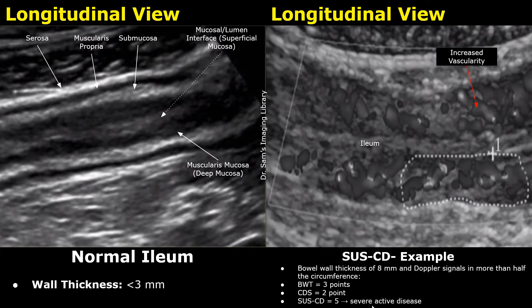Here is another example. In this case, the bowel wall thickness is 8 mm, so it gets 3 points in the bowel wall thickness category, since 3 points are given for 8 mm or greater. There is very strong vascularity seen throughout the bowel wall, so scanning in the transverse plane we would get Doppler signals in more than half the circumference — 2 points in the CDS category. The final score is 3 plus 2 equals 5, the highest possible score, indicating severe active disease.